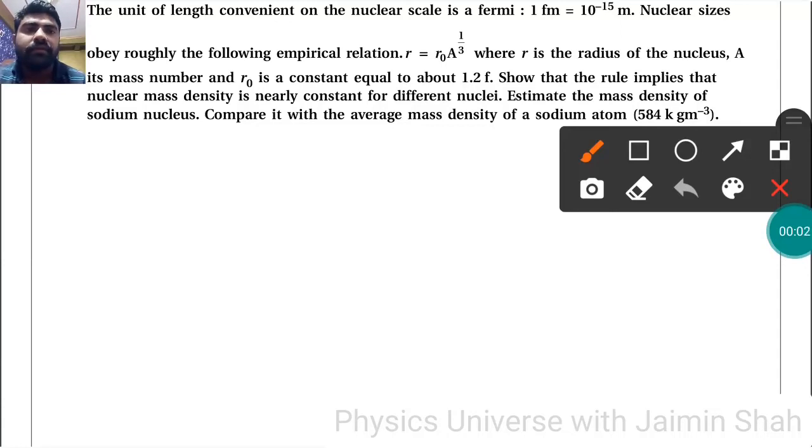The question is: the unit of length convenient on the nuclear scale is Fermi. Nuclear sizes obey roughly the following empirical relation: r = r₀A^(1/3), where r is the radius of the nucleus.